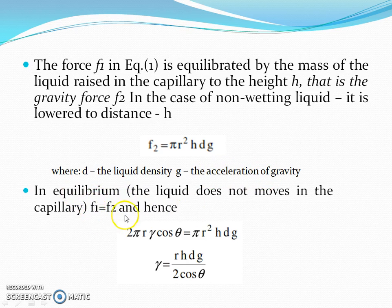In equilibrium, F1 equals F2, and hence γ equals rρhg divided by 2cosθ.